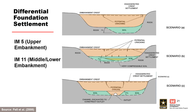This slide illustrates situations which may cause differential settlement in the foundation of dams, leading to cracking, lateral strains, and low-stress zones subject to hydraulic fracture. IM5 is for cracks in the upper part of the embankment and IM11 is for cracking in the middle and lower parts. Differential foundation support conditions across the profile include soil and rock. A very compressible soil of limited aerial extent may be present in the foundation, and differential settlement can also occur over the conduit excavation backfill.